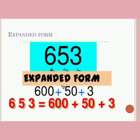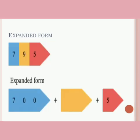Let's see another example. In the number 653, 3 is in the unit's place, 5 in the 10's place, and 6 in the 100's place. So its expanded form is 600 plus 50 plus 3.